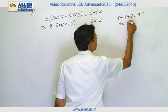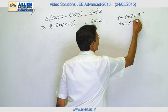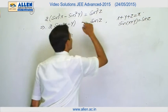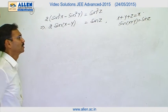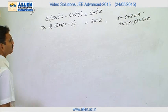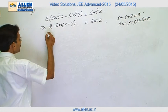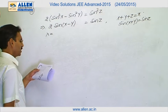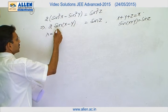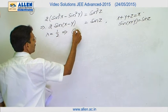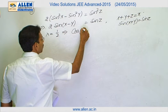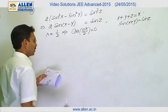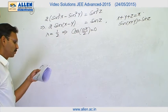Therefore, sine(x+y) equals sine z. So I cancel sine(x+y) on both sides. This gives me λ equals sine(x-y) upon sine z, so half. My equation will then become cos(nπ/2) equals 0, which is true.